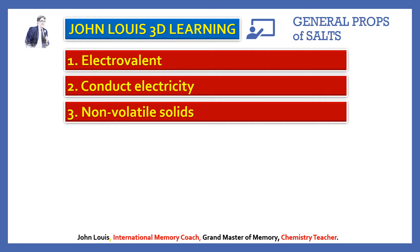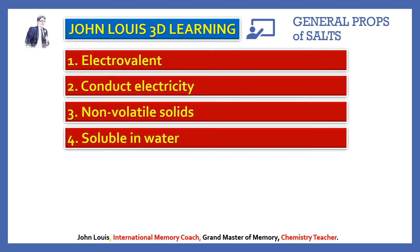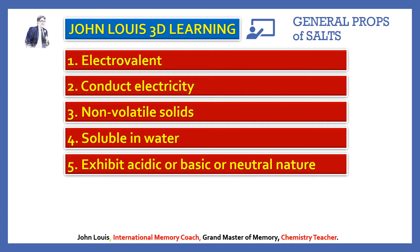Salts are non-volatile in nature, meaning when heated they cannot be evaporated. They are soluble in water and the solubility varies at different temperatures. The last property is they exhibit acidic, basic, or neutral nature. The salt formed from an acid and a base may be acidic, basic, or neutral, and we will learn them in the upcoming slides.